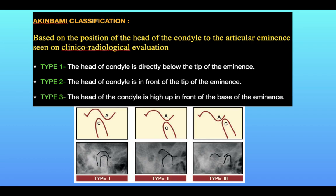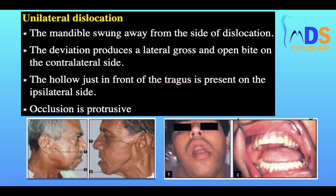Classification of TMJ dislocation based on Akimbani shows the relationship of the condyle with the articular eminence. In Type 1, the head of the condyle is directly below the tip of the articular eminence. In Type 2, the head of the condyle is in front of the tip. In Type 3, the head of the condyle is high up in front of the base of the articular eminence.